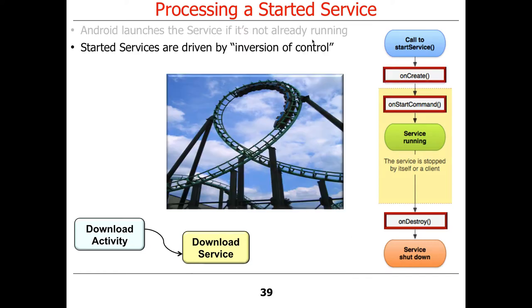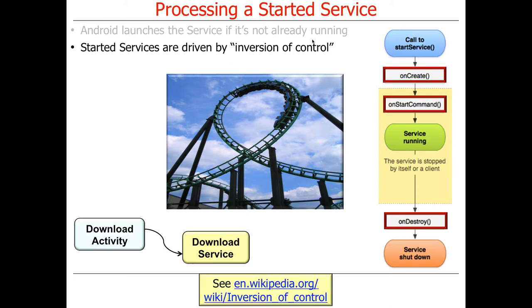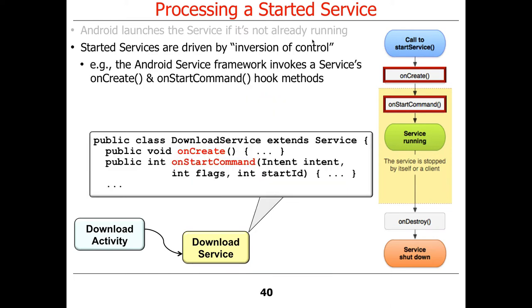Started services, just like activities, are driven by inversion of control — the Hollywood principle: don't call us, we'll call you. When you start a service, the onCreate method is called first, followed by onStartCommand. The download service extends service, and its onCreate method will go ahead and start a handler thread. How many times is onCreate called on a service? Once — the first time it's activated.